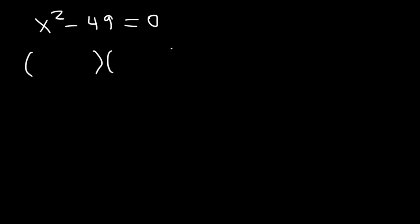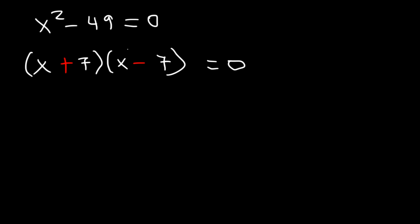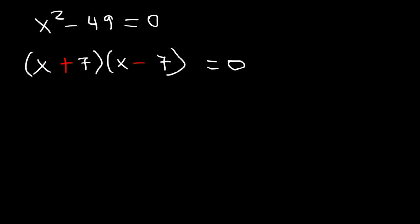The square root of x squared is x. The square root of 49 is 7. So it's going to be x plus 7 and x minus 7. Now you need to set each factor equal to 0 at this point, and then you can find the value of x.